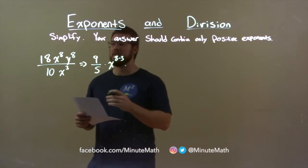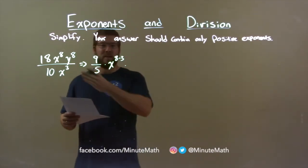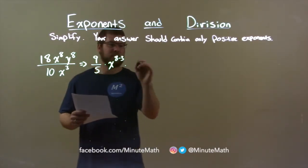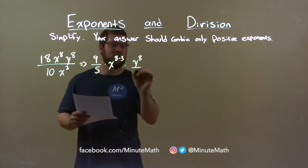Lastly, we have y to the 8th power. That's just by itself. There's nothing else that has the variable y. So we have y to the 8th, and that's being divided by 1.